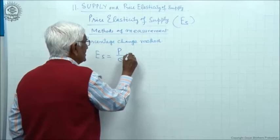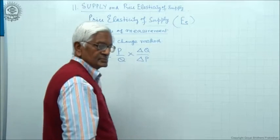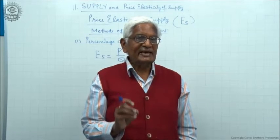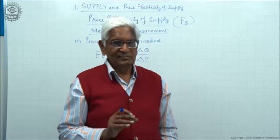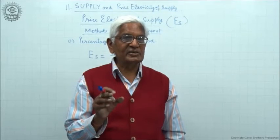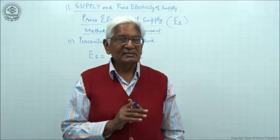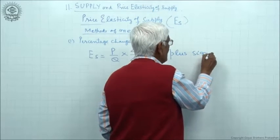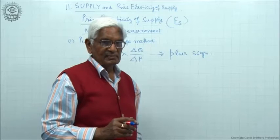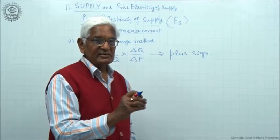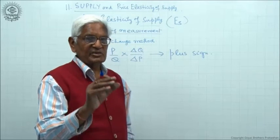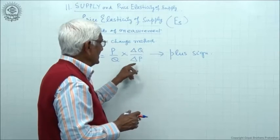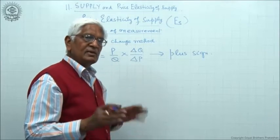The formula is P upon Q multiplied by delta Q upon delta P. The method remains the same as in case of demand. The only difference is that in case of demand, the result carries a minus sign because there is an inverse relation between price and demand. But in this case, the result will carry a plus sign.